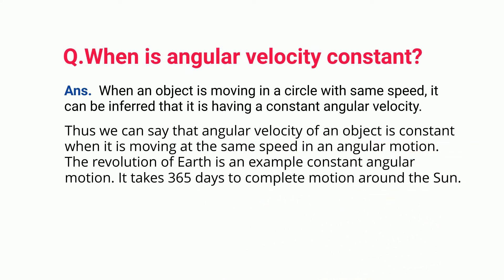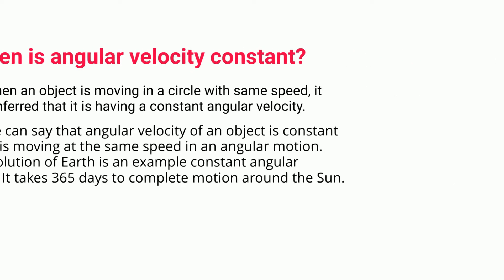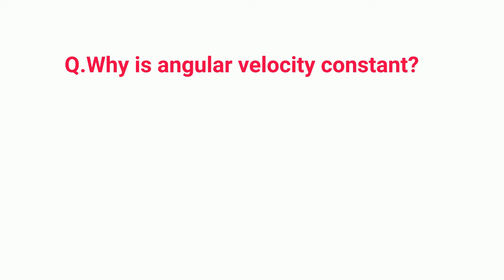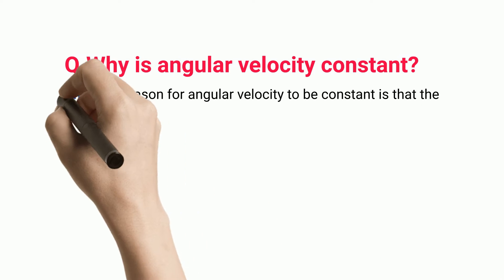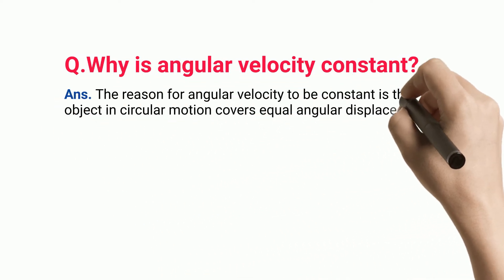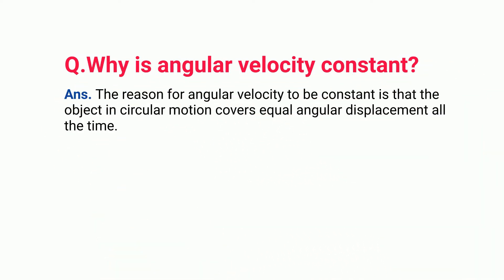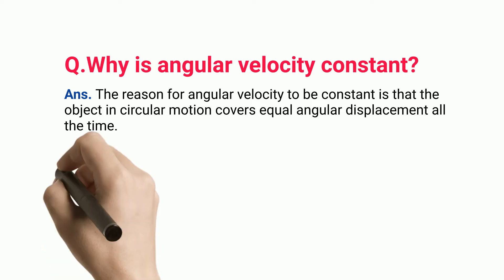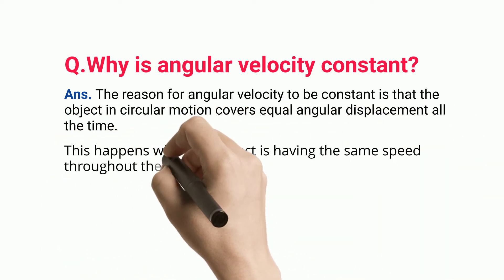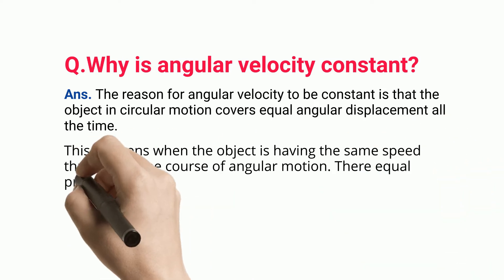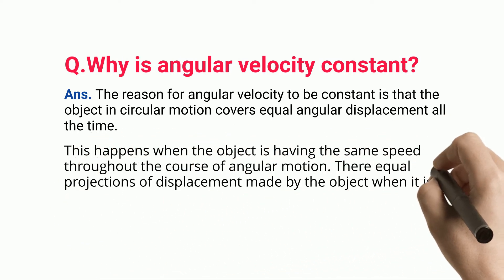Why is angular velocity constant? The reason is that the object in circular motion covers equal angular displacement at all times. This happens when the object maintains the same speed throughout its angular motion, resulting in equal projections of displacement made by the object.